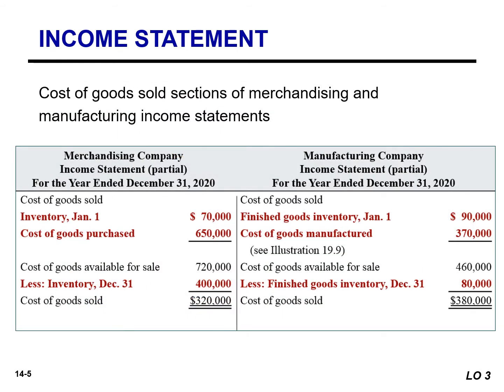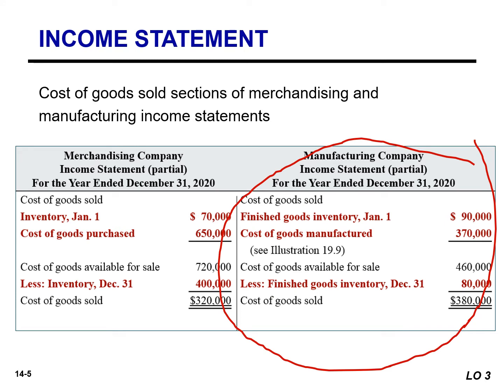This slide shows the different presentations of the cost of goods sold sections for both a merchandising and a manufacturing company. The other sections of an income statement are similar. Since Accounting 1 covered the income statement for our merchandising company, our focus in this course will be on the preparation of an income statement for a manufacturing company.